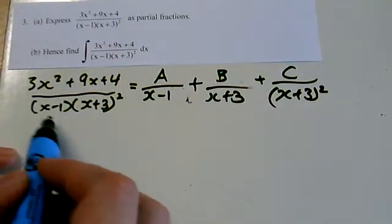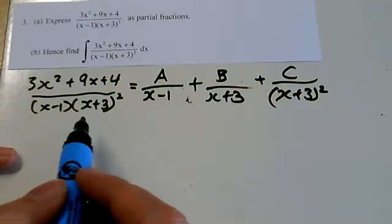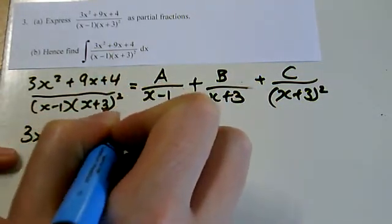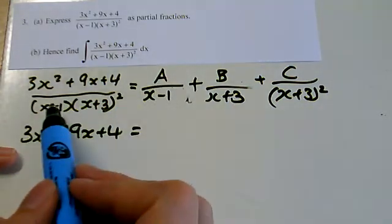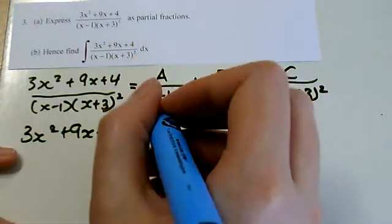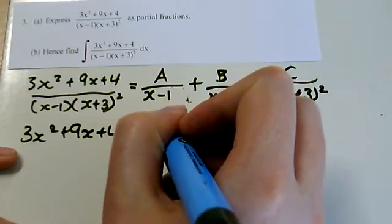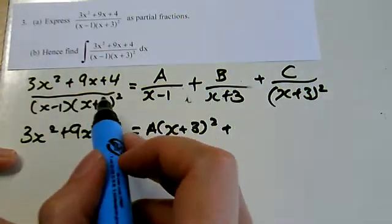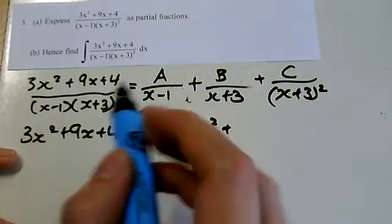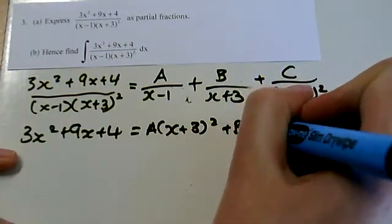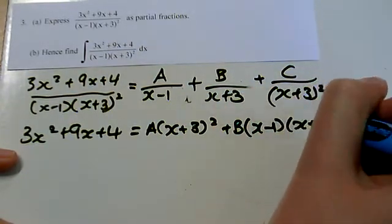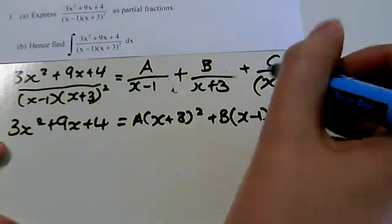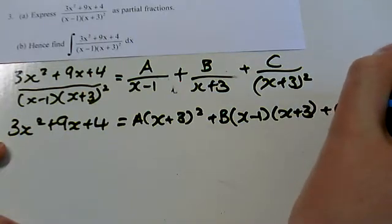Okay, again, multiplying everything through by this then. So on the left-hand side, it's all going to cancel. On the right-hand side, the x minus 1 will cancel with that x minus 1. So that leaves you x plus 3 squared. For the B, I'm going to lose an x plus 3, so that leaves me an x minus 1 and an x plus 3. And on the last one then, we're going to cancel the x plus 3 squared, so that will just leave me C lots of x minus 1.